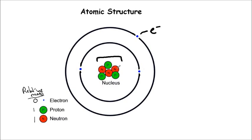So this example here would have 1, 2, 3 protons and 4, 5, 6 neutrons. So in there there's a total mass, as it were, of 6 things.